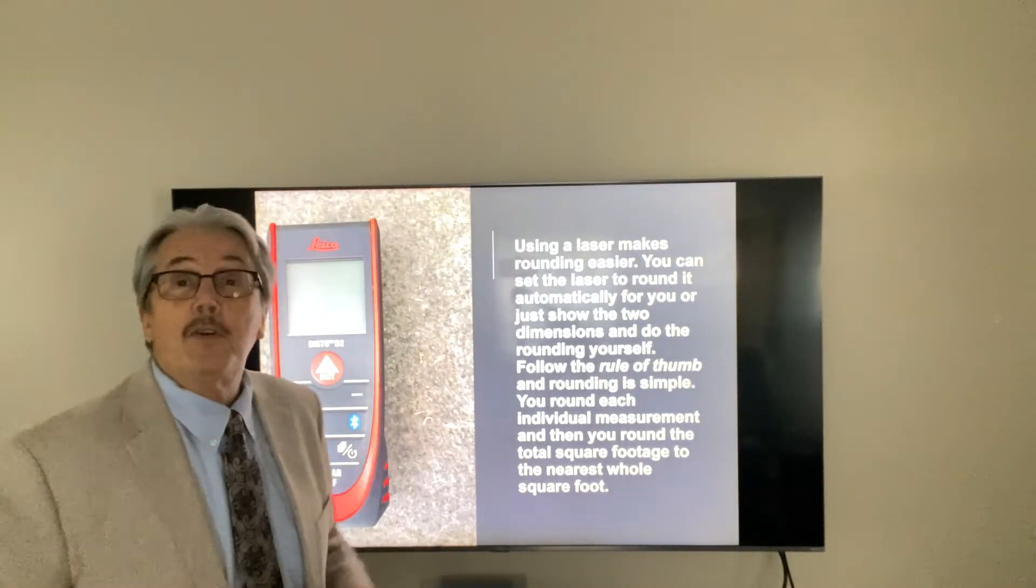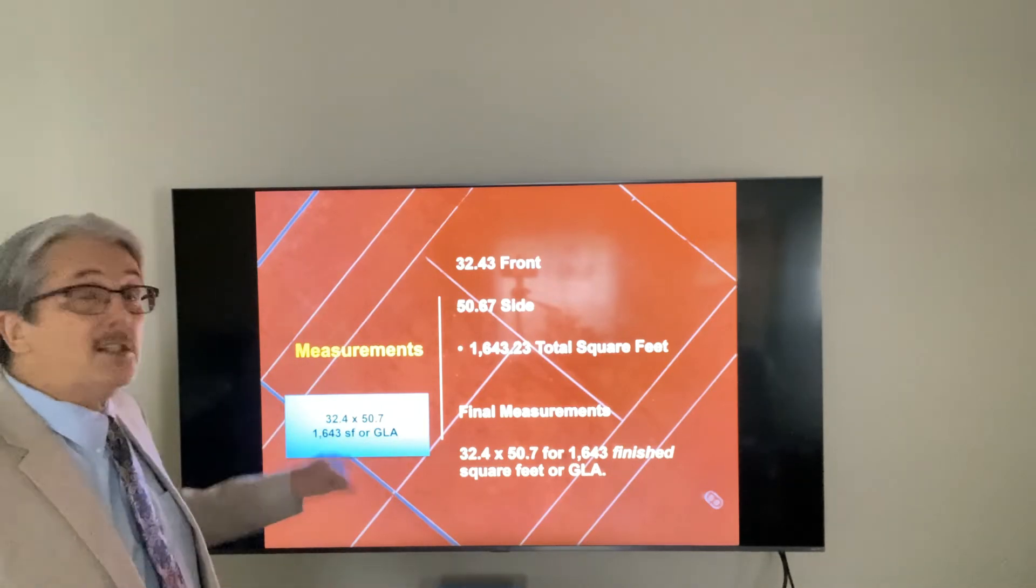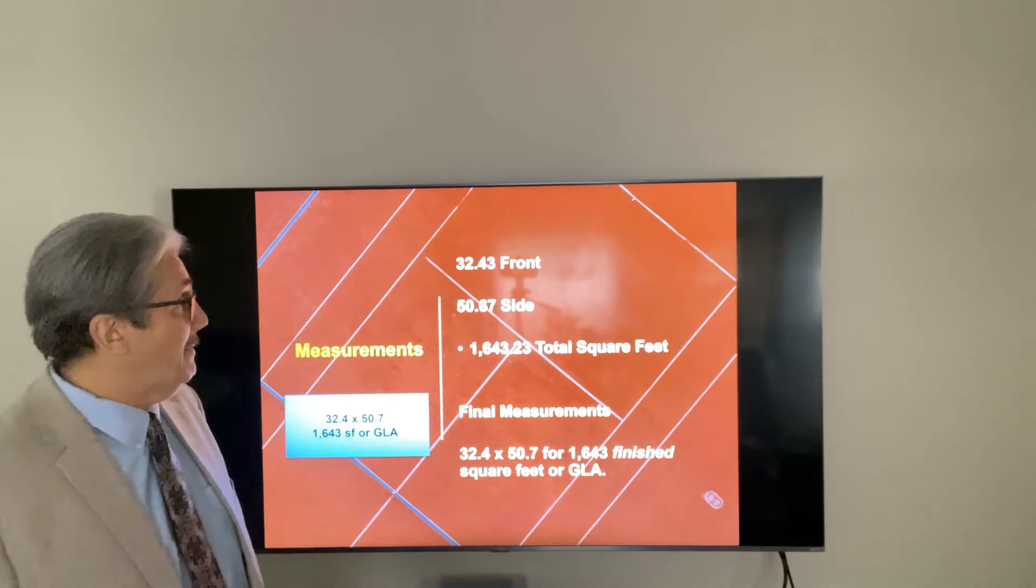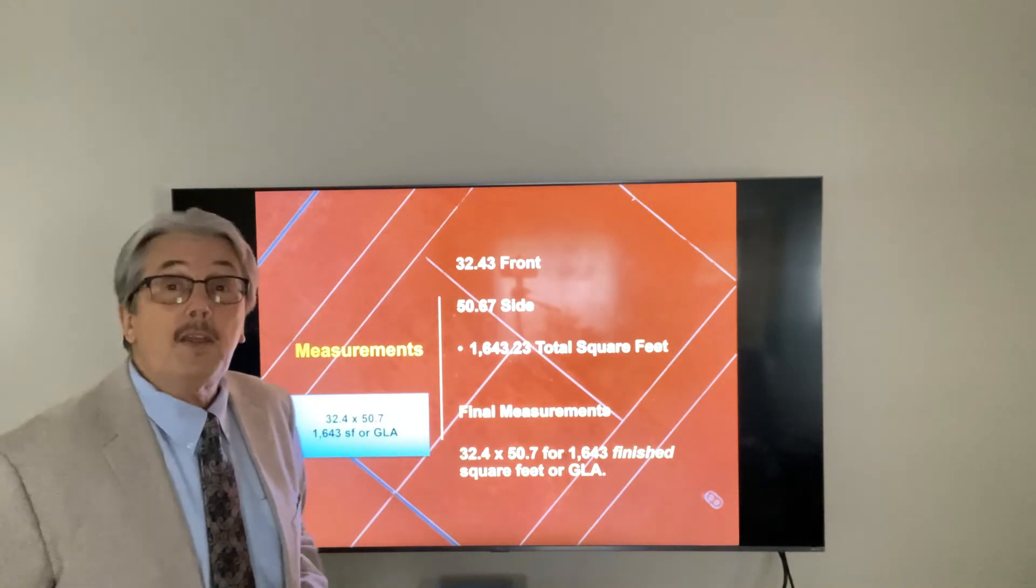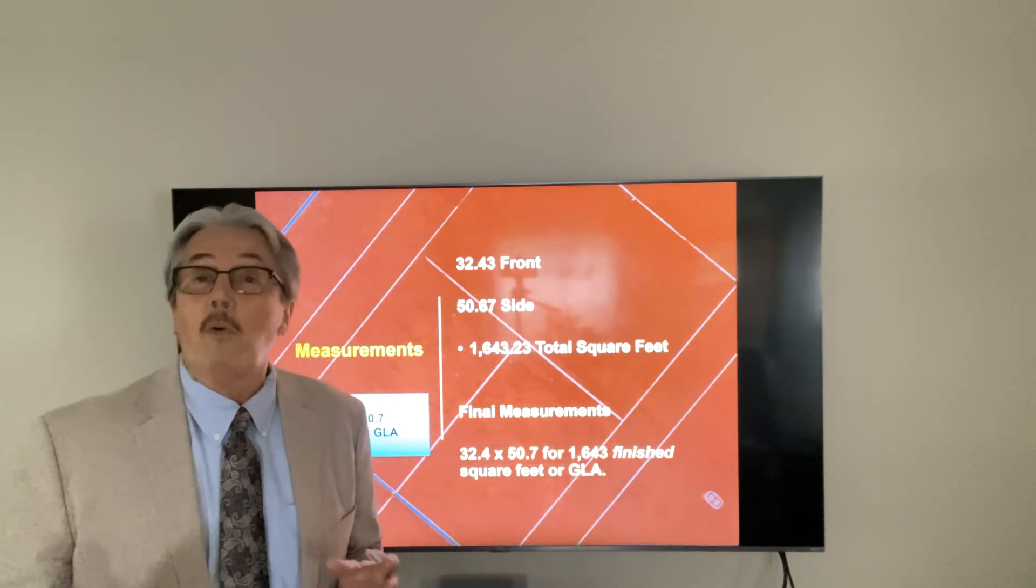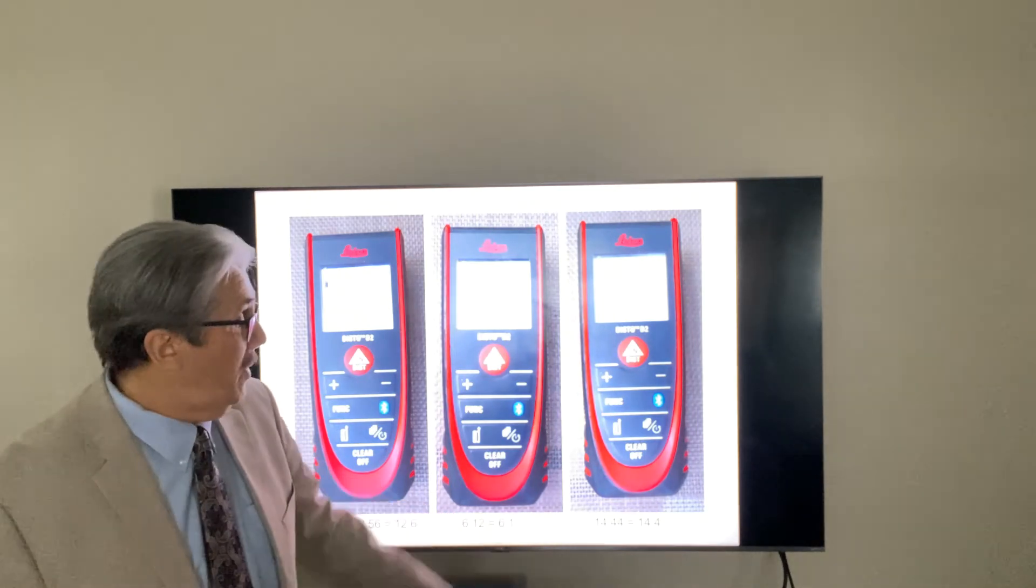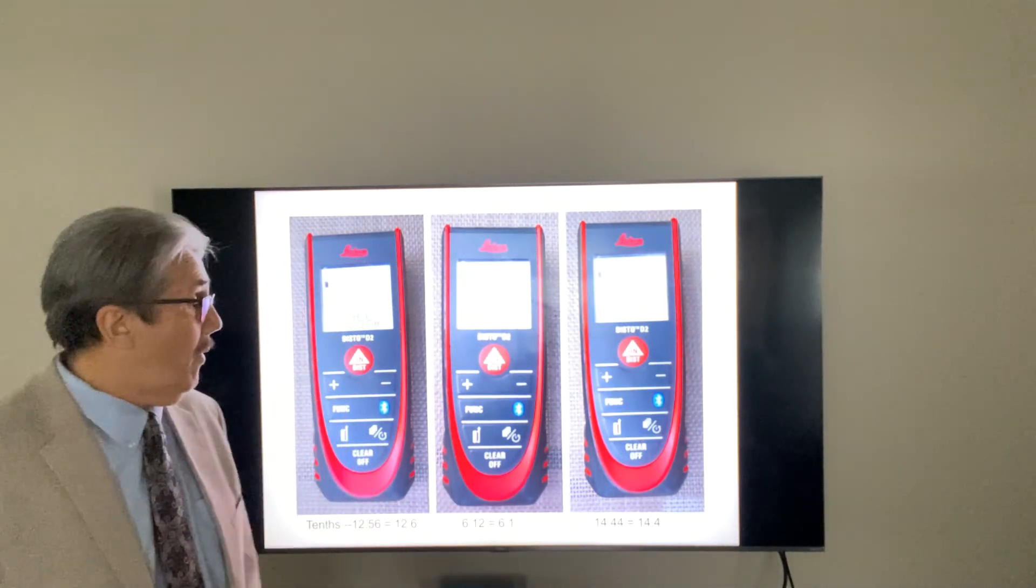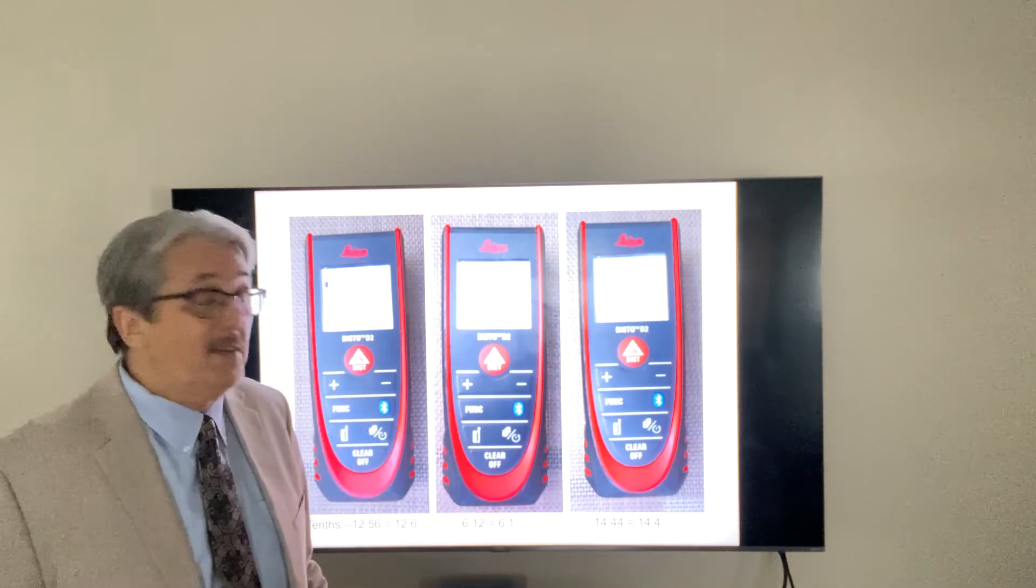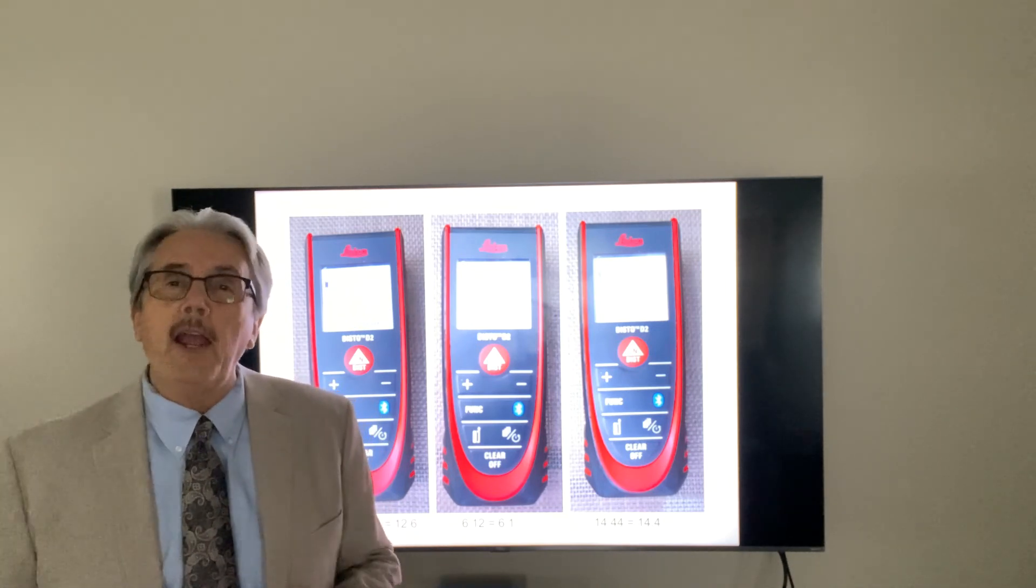If you're using the laser measure, it's the same thing. If you've got 32.43 on the front, it's 32.4. If you've got 50.67 on the side, you're going to round that to 50.7. So our total square footage at 1,643.23, guess what? 1,643 square feet. It's not any more complicated than that, guys. So the 12.56 is 12.6, 6.12 is 6.1, 14.44 is 14.4. Or you can take your software and gauge it to put in anything you want. If you want to put the level of detail with the two measurements in there, you can use your software. Call your software provider and they will help you set it up however you want to put it in.